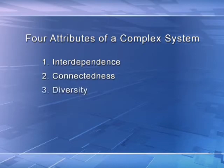Implicit in that characterization of interdependence was the idea that the entities were connected in some way. And in our many examples, the entities were, for the most part, diverse. In this lecture, we're going to dig more deeply into the four main attributes of a complex system: interdependence, connectedness, diversity, and adaptation and learning — and see how those things generate complexity.